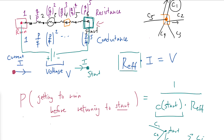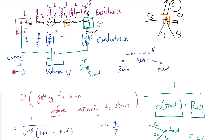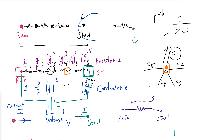Now for the actual calculation. The conductance at start for the left sub-circuit is p/q to the fifth power, which is r^{−5}. For the effective resistance, since resistors from ruin to start are in series, we simply add them: 1 + r + r² + r³ + r⁴ + r⁵. This gives the effective resistance directly, and that takes care of the probability for the left part.